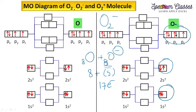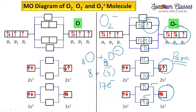Filling 17 electrons for O2 minus — counting 1 through 17. In this case we are having 1 unpaired electron, so it is paramagnetic in nature. The electronic configuration is written the same way: sigma, sigma star, sigma, sigma star, sigma — formed by 2px with 2 electrons — then pi, pi, pi star, and pi star.